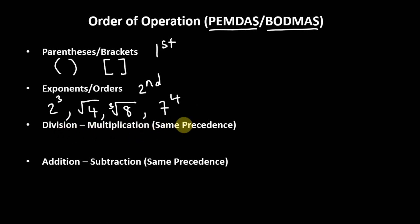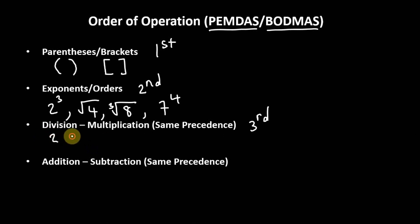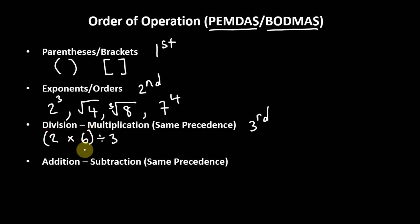Now division and multiplication have the same precedence, meaning both operations are ranked at the same level. So this is the third thing we look for. If you're given a problem with both these operations in the same line — for example, 2 times 6 divided by 3 — you start working from left to right. So 2 times 6 is 12, and 12 divided by 3 gives you 4. That's what we mean by same precedence.